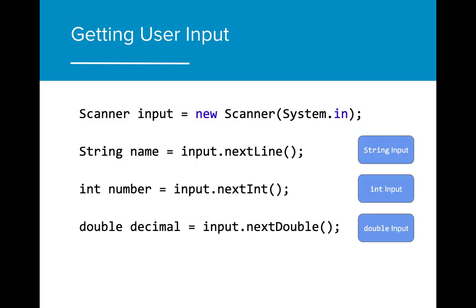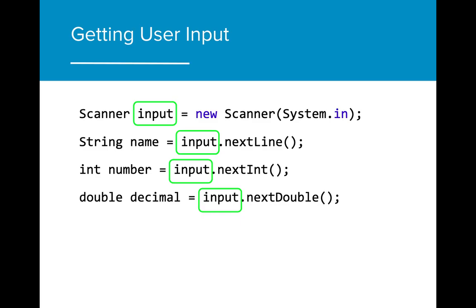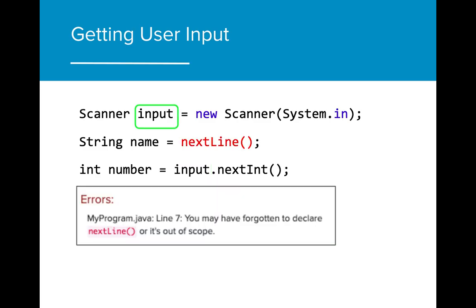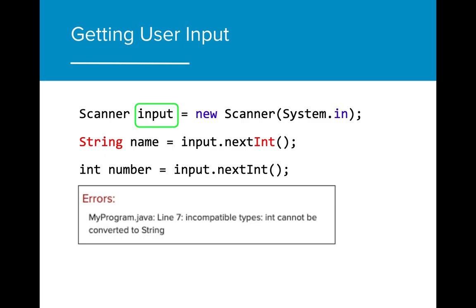In order to receive input from the user, we must create a new variable that takes the assigned value of the Scanner variable's .next method. Each data type has its own corresponding next command that will allow the program to receive the input value. You must use the Scanner variable that you created followed by the .nextValue() command. If you do not include the variable name, it will cause your program to throw an error, as it does not recognize the command without the Scanner variable. The data type you are declaring the variable as must correspond to the input type — because nextInt is being used for a string variable here, the program is throwing an error.